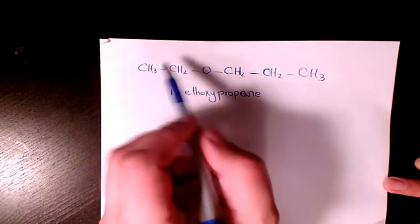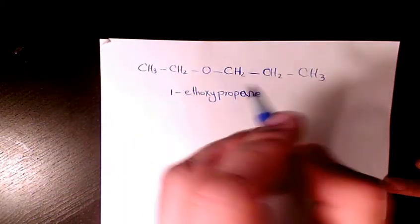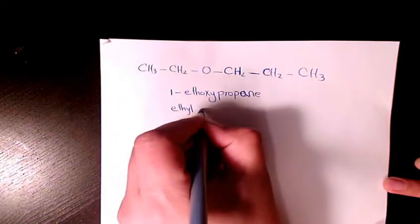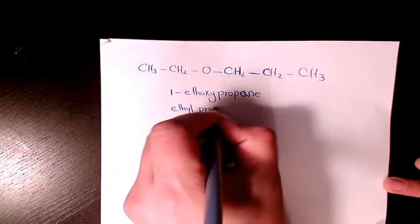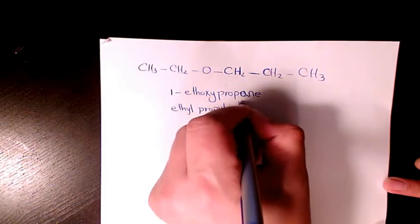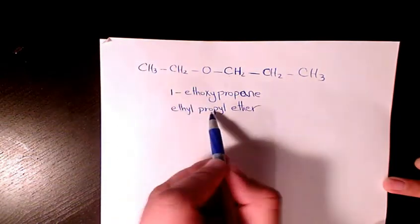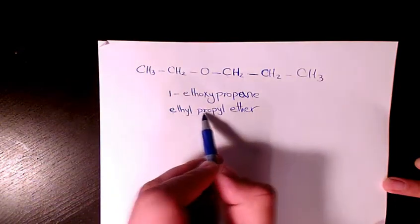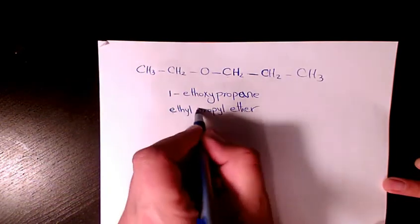name. Since we have ethyl here and propyl here, we can have ethyl propyl ether. As you see here, we need to always follow the alphabetic rule because E comes before P. So that's the common